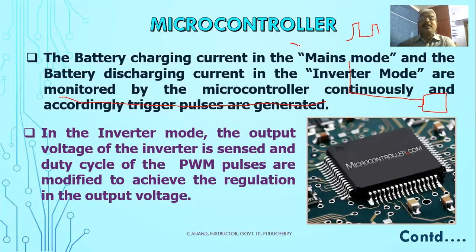If the output voltage is higher than required, the T-on period is increased. If the discharging current is lower and the output voltage is lower, the T-on period is adjusted accordingly.